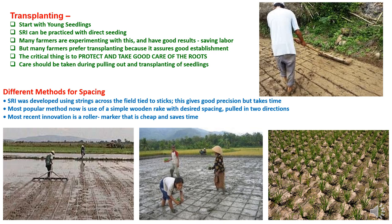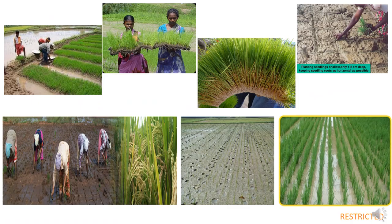There are different methods used for making spacing. SRI was originally developed using strings across the fields tied to sticks, giving good precision but taking time. The most popular method now is the use of a simple wooden rake with desired spacing pulled in two directions. The most recent innovation is a roller marker that is cheap and saves time. Various pictures of fields show management of nurseries, uprooting of nurseries, marking grid lines in a square method before transplanting, and the transplanting process.